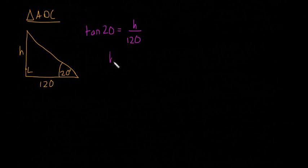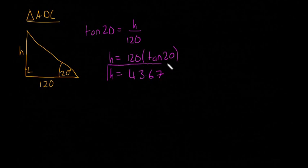So I'm going to say that tan(20) is equal to the opposite, which is h, over the adjacent, which is 120. So that means if we multiply both sides by 120, then h is going to be 120 multiplied by tan(20). We're going to stick that into a calculator and we're going to find that h is equal to 43.67.